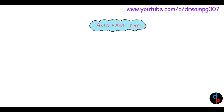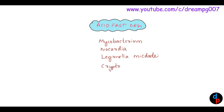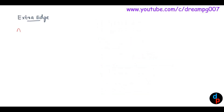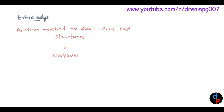Let's look into some examples of acid-fast organisms: Mycobacterium, Nocardia, Legionella micdadei, Cryptosporidium parvum, cysts of Isospora and Cyclospora, and the head of sperm. Another method used for acid-fast organisms is auramine staining, where the background is stained green in color.